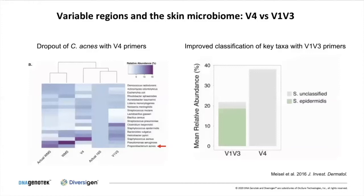There's been a lot of work done in the field looking at the impact of different variable regions on analyzing the skin microbiome. Data from a paper from Elizabeth Grice's lab showed different performance for analyzing the skin microbiome: they saw a dropout of the critical taxon Cutibacterium acnes — or Propionibacterium acnes — when using V4 primers. They also noted that V1-V3, because of its larger target size and increased polymorphisms within the variable region, did a better job of classifying certain taxa. For example, S. epidermidis was classified to the species level with V1-V3 but only to Staphylococcus genus using V4.